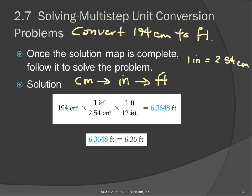Do we count all the significant figures, even with 2.54 and 12? No. We're not going to count those because those are exact. One foot is exactly 12 inches, so we could say they have infinite significant figures — because it's exact, that's not going to affect it. So we ignore that when we talk about significant figures. Here's a little shortcut: most of the time, however many significant figures you have in your starting number will be how many you have in the end. Converting the units does not reduce the number of significant figures. It doesn't always work, but it'll work most of the time.